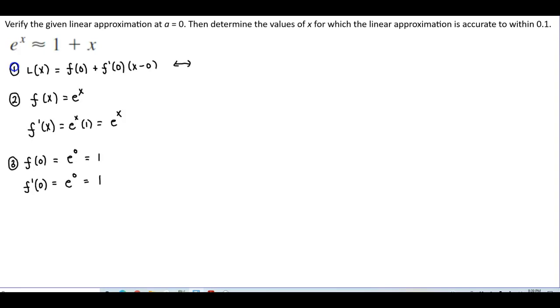So using the formula here, we can then say that L of x is going to equal f of 0, which is 1, plus f prime of 0, which is 1, times x minus 0. So L of x is going to equal 1 plus x, and therefore we can verify what we have at the beginning of the question.